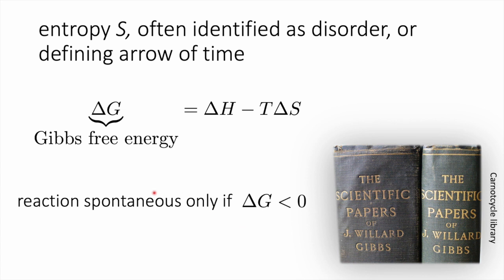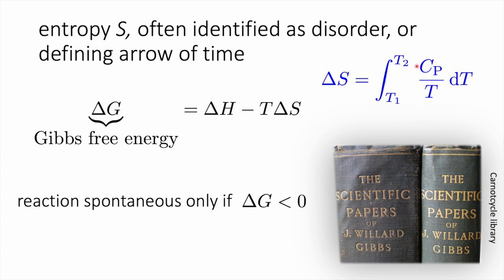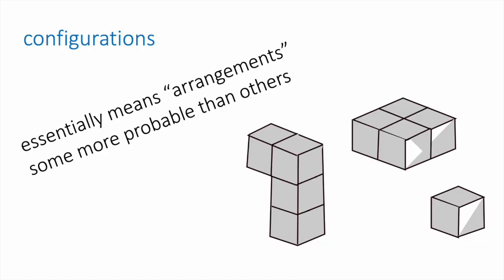The entropy change is the integral between T1 and T2 of the heat capacity divided by the temperature, dT — so this quantity too can be measured using differential scanning calorimetry. Going back to what we mean by configurations: configurations essentially mean different kinds of arrangements of particles. In the case of atoms, having red atoms located on one side and blue atoms on the other is an ordered arrangement, whereas if we allow them to mix, we have many many different configurations available.